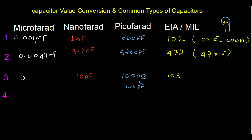To convert 10 nanofarad to microfarad, divide by 1000: 10 ÷ 1000 = 0.01 microfarad.